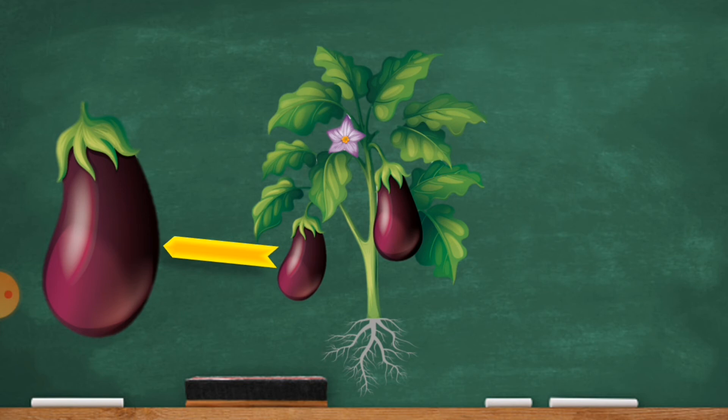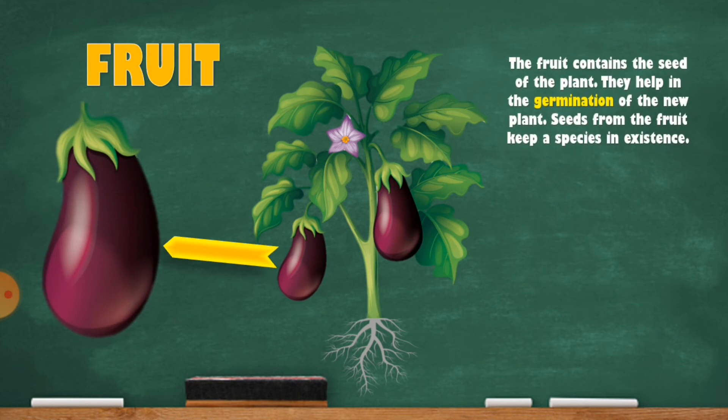Now we will talk about the fruit. The fruit contains the seed of the plant. They help in the germination of the new plant. Seeds from the fruit keep a species in existence.